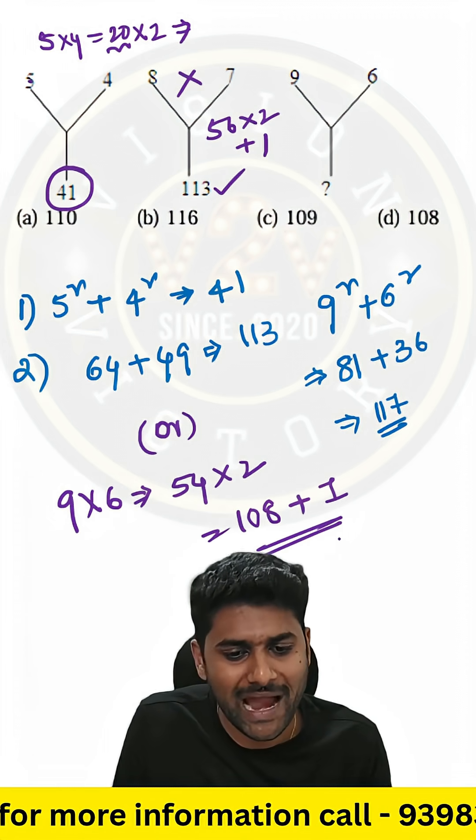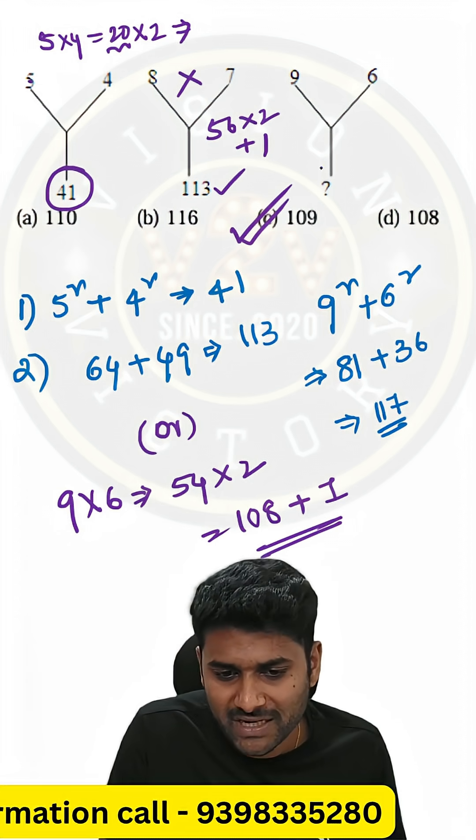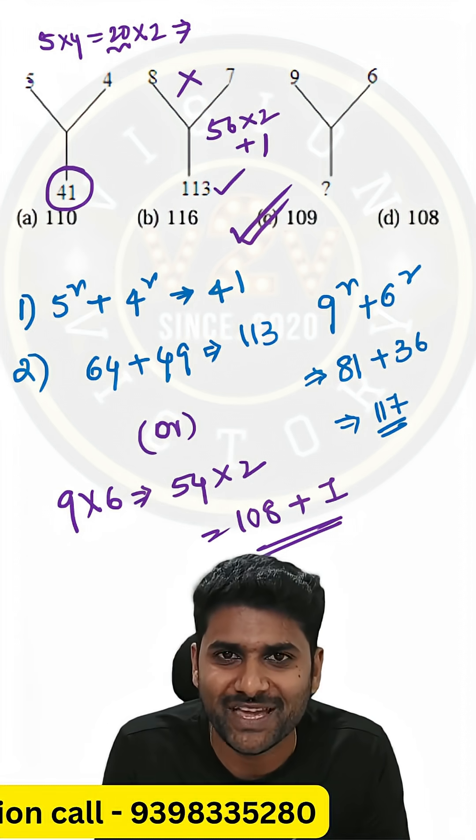According to the logic, you have to add 1 to that previous resultant. That's why the perfect logic and answer for this question is 109. Thank you guys.